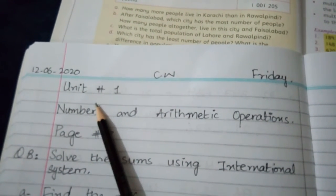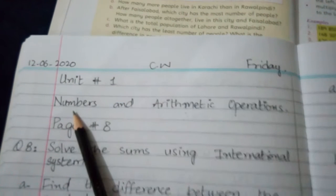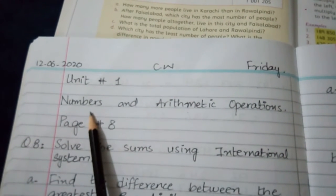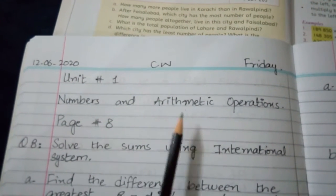Then you will write class, unit number 1 here on the first line. And then you will leave one line after it. Then write name of the unit: Numbers and Arithmetic Operations.